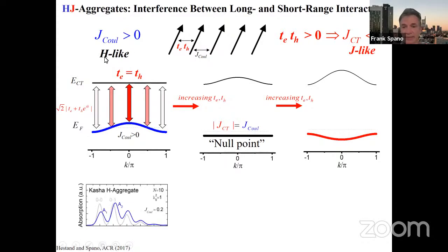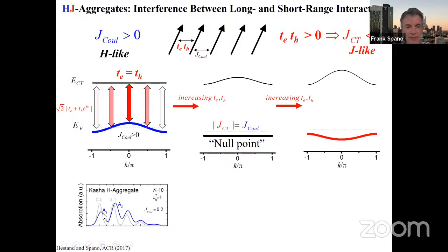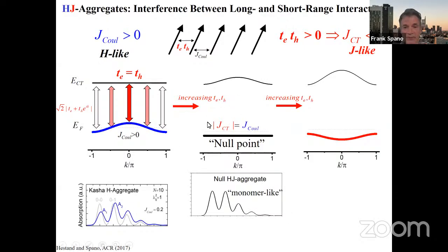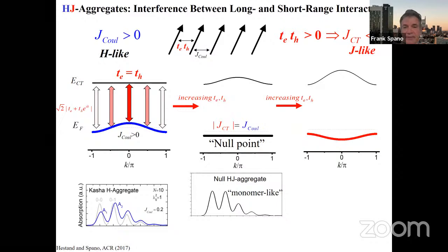Doing the full numerical calculation of spectral properties: starting with a monomer with λ²=1 (equal intensities), then the Kasha H aggregate (without CT yet) shows a diminished A₀₀ and A₀₁. But as I continue to increase the charge transfer integrals, I go through a null point. At the null point — in this perturbative approximation with well-separated levels — the spectrum has equal intensities for the first two peaks, looking just like the monomer. That's the null aggregate: when electronic couplings cancel, the system looks like an isolated molecule even though there are strong couplings of opposite signs. As I continue to increase T_E and T_H further...